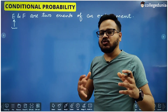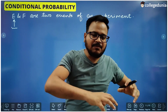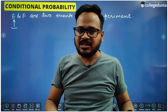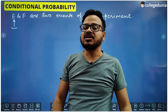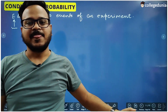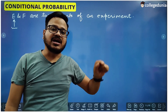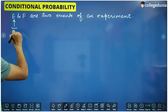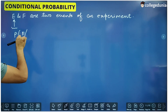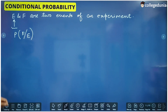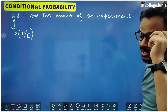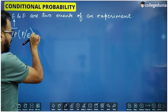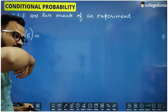Till now we have calculated the probability of a single event, independent of the other events happening in the same experiment. But now one event has already occurred, and after that particular event we are interested in finding the probability of the next event. That probability is called the conditional probability of the second event — for example, written as P(F|E). This is read as: the conditional probability of occurrence of F when E has already occurred.